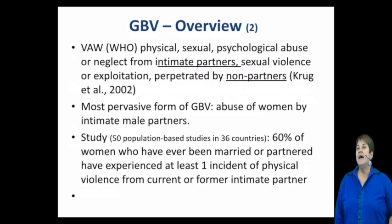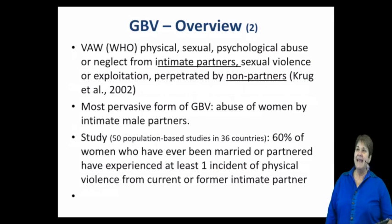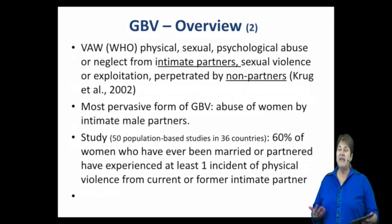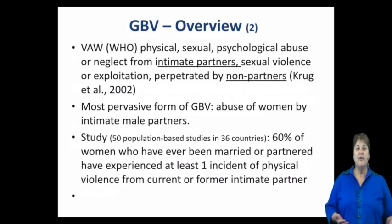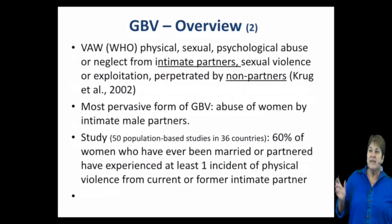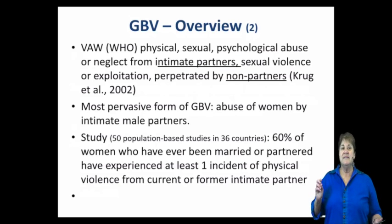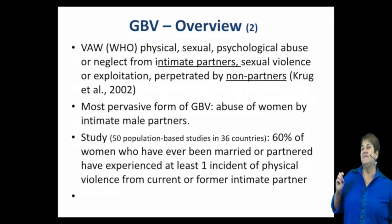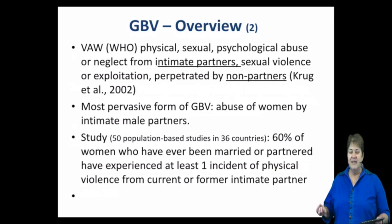The WHO defines physical, sexual, and psychological abuse or neglect from intimate partners, and sees intimate partner violence as the most pervasive form of abuse of women. Although sexual violence is also common, intimate partner violence is in fact the most prominent form — which is really disturbing, because it means women often have to fear the people closest to them.